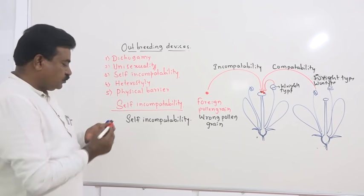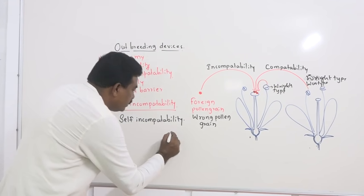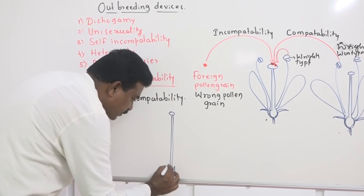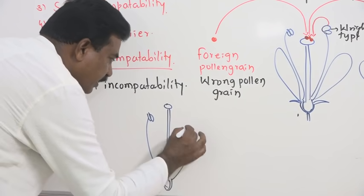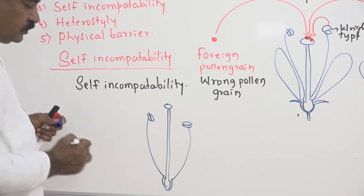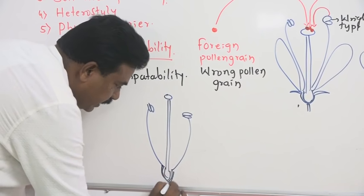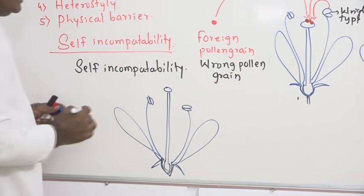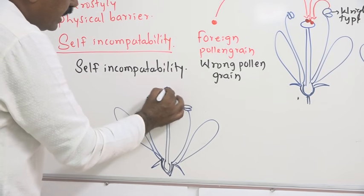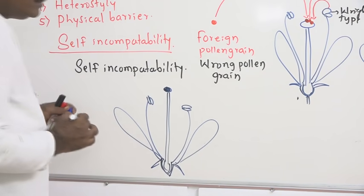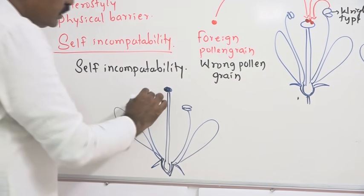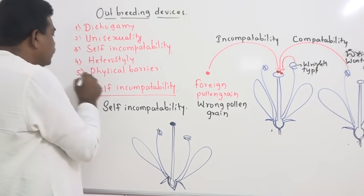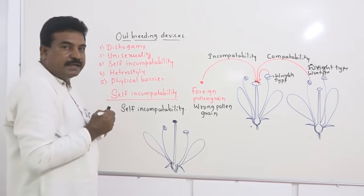The fourth outbreeding device is heterostyly. In this condition, the height of the stigma and the height of the stamen are not at the same level. In most flowering plants, the height of the stigma is higher compared to the stamen height. As a result, there is no chance of self-pollination — cross-pollination is the rule.